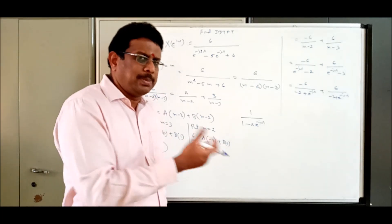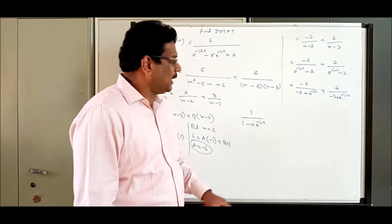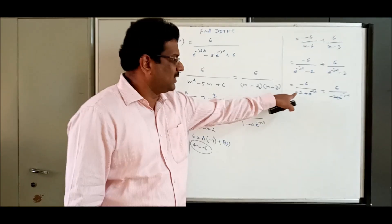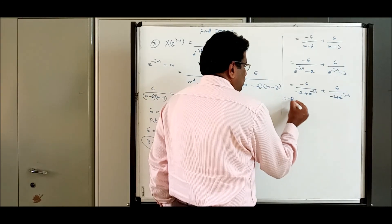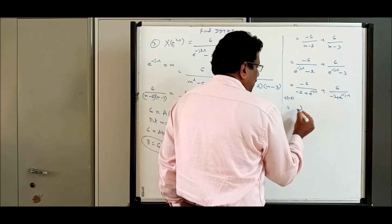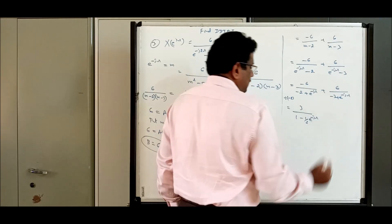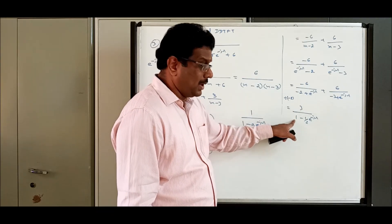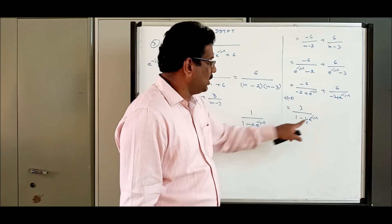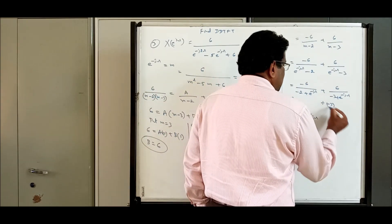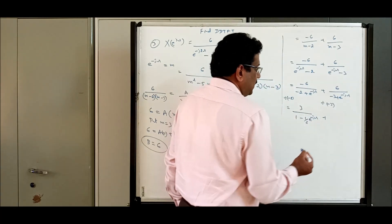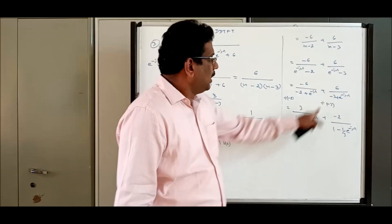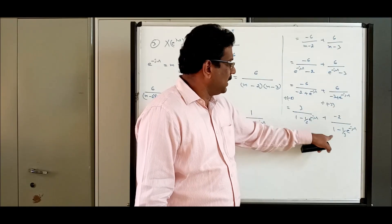We just rearranged — swapped terms so that e^(-jω) comes second, matching the general format. Now the first term should be 1. So divide numerator and denominator by minus 2: this gives 3 by (1 minus 1/2 · e^(-jω)). For the second term, divide by minus 3: this gives minus 2 by (1 minus 1/3 · e^(-jω)). So x(e^(jω)) equals 3 by (1 minus 1/2 · e^(-jω)) minus 2 by (1 minus 1/3 · e^(-jω)).